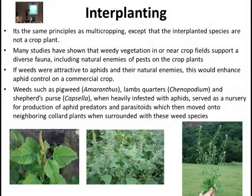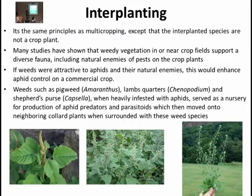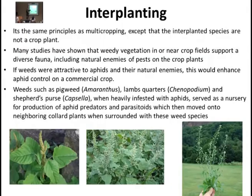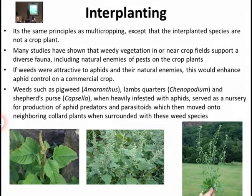نباتات عشبية مثل Amaranthus (الأمرانثس) وChenopodium (الكنوبوديوم) وshepherd's purse (capsella) تكون مثقلة بالأفيد وتعمل كمصدر طبيعي للإنتاج الطبيعي لمفترسات ومتطفلات الأفيد، التي تنتقل بعدها إلى البستان المجاور أو المحيط بنفس أنواع الأعشاب.